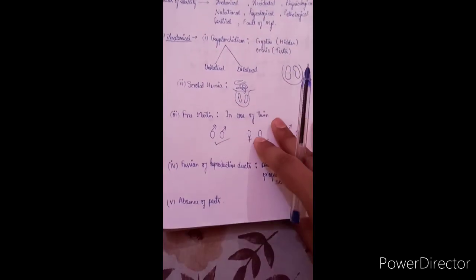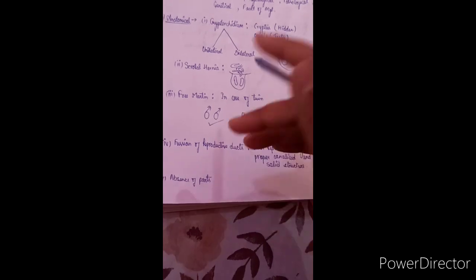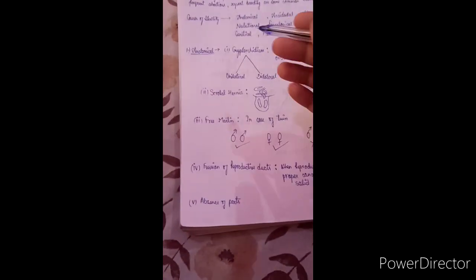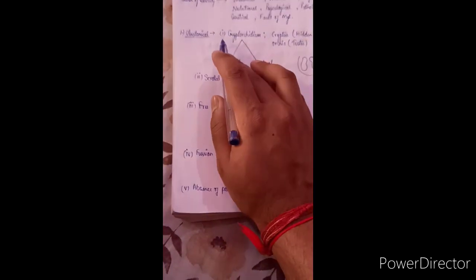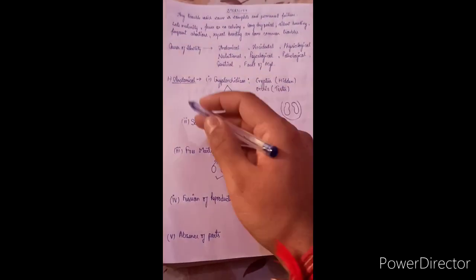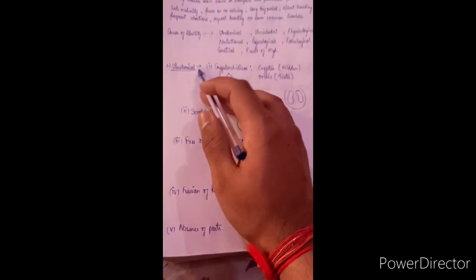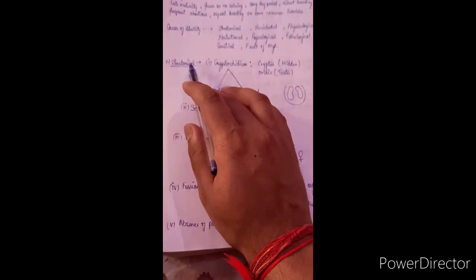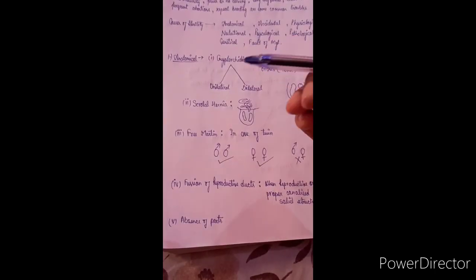Now we discuss the causes of sterility. The first category is anatomical causes — meaning any disturbance or trouble in the reproductive anatomy of the animal. Any problem in the reproductive anatomy is known as an anatomical reason for sterility.